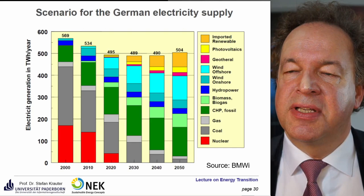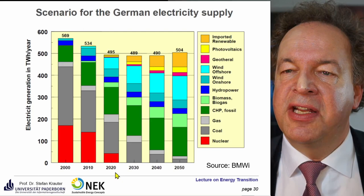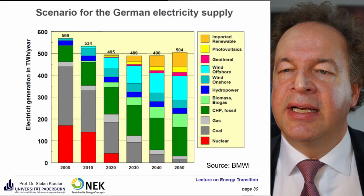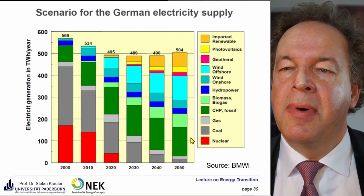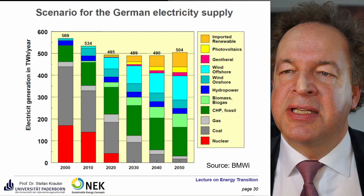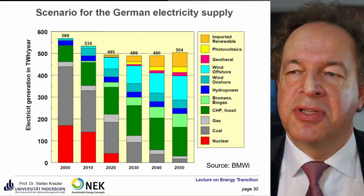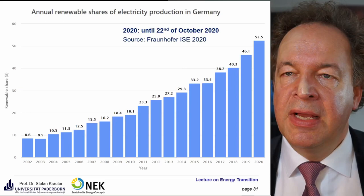Another ministry scenario shows a small increase in electricity consumption as mobility shifts to the electricity sector — formerly in the transport sector, that energy must now be accounted for in the electricity sector.